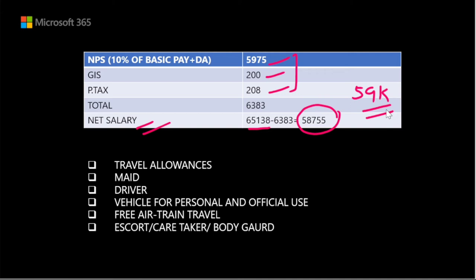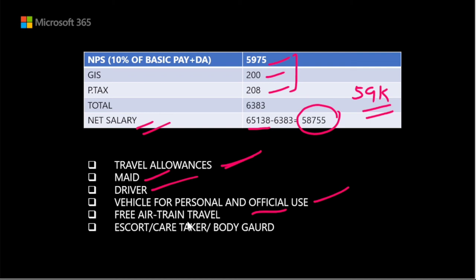Additionally, there is a traveling allowance, which is a very basic allowance depending on duty. There is also a driver allowance and a vehicle provided for both personal and official use — officially for official use. Benefits also include free air and train travel, along with a head escort, caretaker, and board guard.